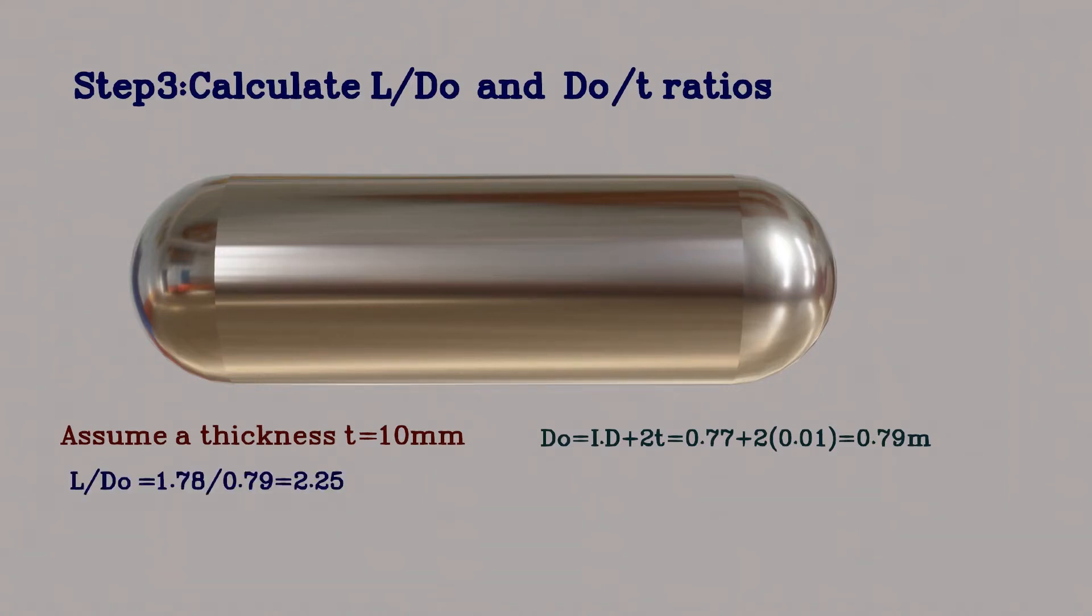In a previous video on the design of pressure vessels, we have seen how we can calculate L by D0 and D0 by T from given or proposed geometrical data of the vessel for the selected thickness.